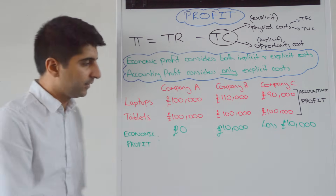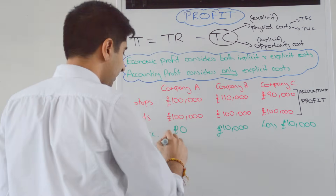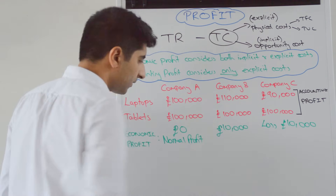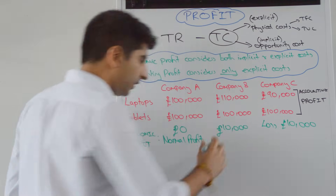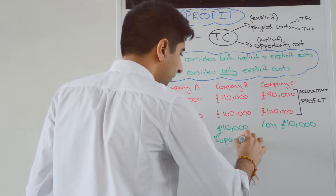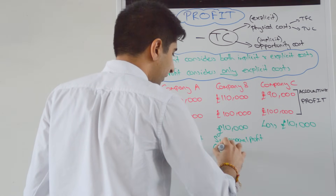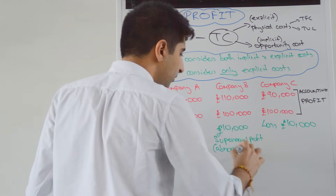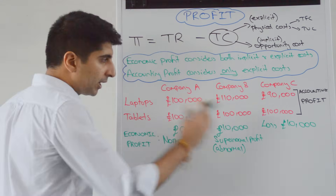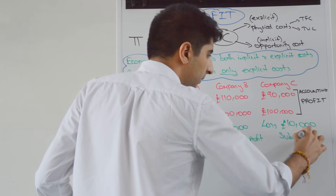That gives us some important figures to consider. An economist would call a zero economic profit a normal profit. A positive economic profit is known as a supernormal profit, also called an abnormal profit — it doesn't matter which word is used, they both mean exactly the same thing. Whereas an economic loss is known as a subnormal profit.